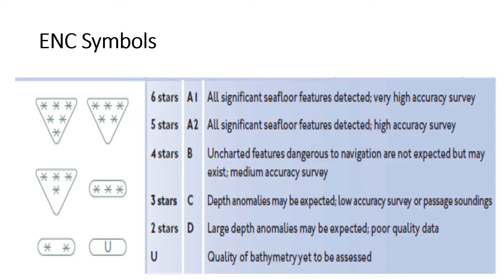Each symbol signifies the quality of bathymetry. You can see it's pretty self-explanatory from the screen. Six stars determine very high accuracy; five stars determine high accuracy survey — not very high but high accuracy. The letter U at the bottom signifies that the quality of bathymetry is yet to be assessed.